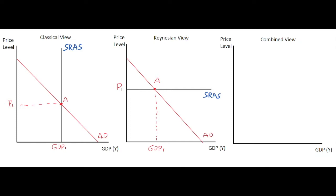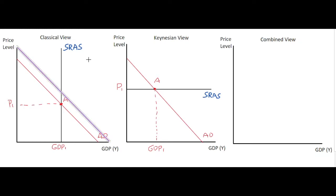The interesting thing is what happens when there's a change in the economy. Let's say there's a positive shock to the aggregate demand curve — maybe interest rates have dropped — meaning consumers and firms will invest more. This means the aggregate demand curve will shift rightwards, which we'll call AD1 to represent the new demand.